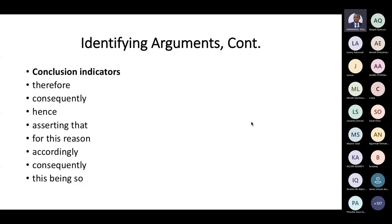Then you have conclusion indicators: 'therefore,' 'consequently,' 'hence,' 'ascertained that,' 'for this reason.' These tell you you are looking at a conclusion. However, you must not expect to see these things in every argument — most arguments don't contain them. They are used for emphasis and are not necessary in sentences that compose arguments. You need to learn to identify arguments without these indicators, and you wouldn't expect to see indicators in your examination.